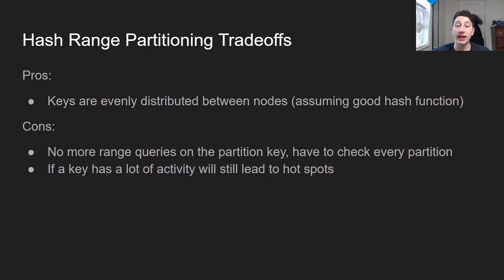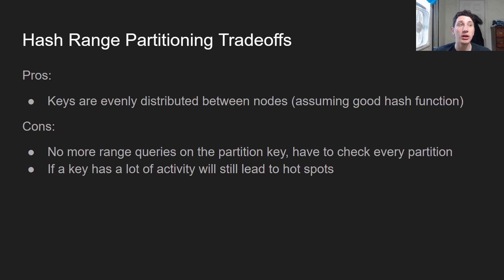Furthermore, if a key has a lot of activity, there's still going to be hotspots. Even though the keys might be evenly distributed, if you're constantly updating or writing to a given key, it is going to be problematic. One strategy to mitigate this is to take the key that is very popular, add a random number to it — let's say between 1 and 20 — and then hash the key plus that random number, so that 1/20th of the load on the key is actually going to be distributed. The disadvantage of that is that every time you make a query, you have to search all 20 of those key-plus-random-number values and aggregate that data.